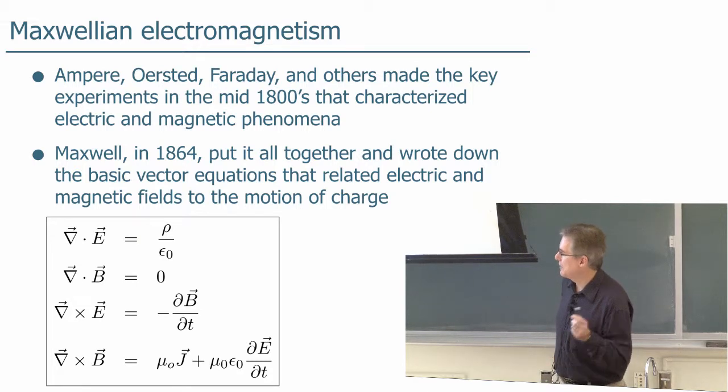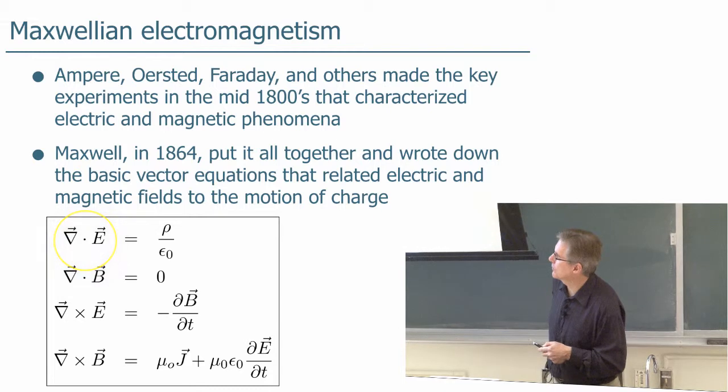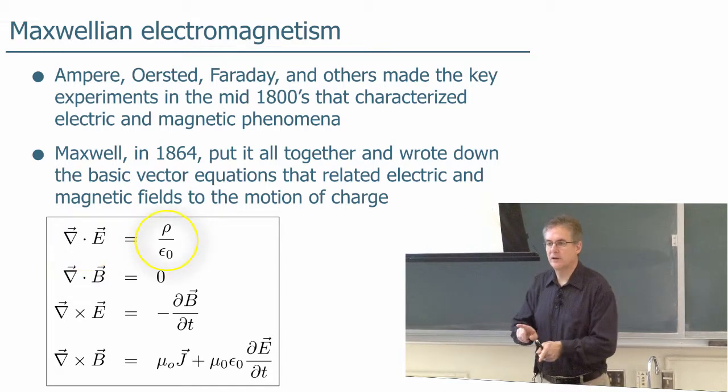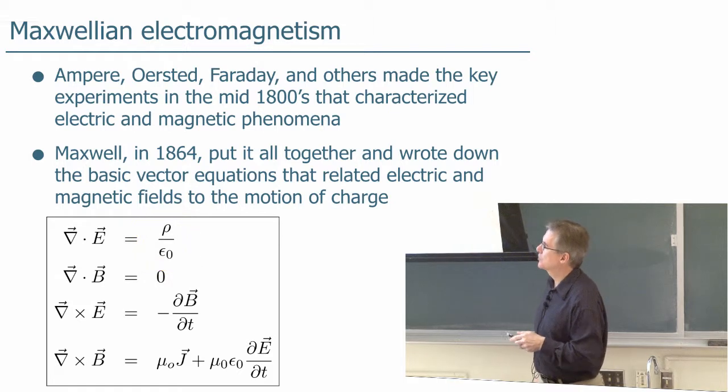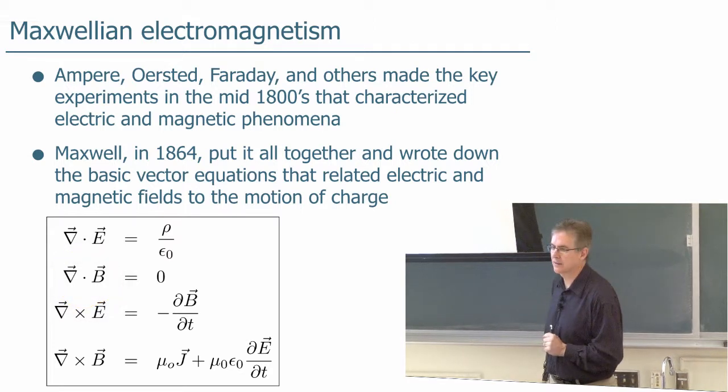Now, maybe you haven't taken vector calculus, no matter, you can kind of get the idea. This is something involving the electric field here, it's a derivative of the electric field, and that's equal to the charge. It just says electric field lines spread out from charge. Magnetic field lines would also spread out from charge if there were any, but there aren't, so we set that one to zero. No magnetic charges.